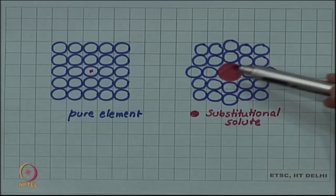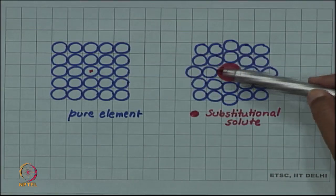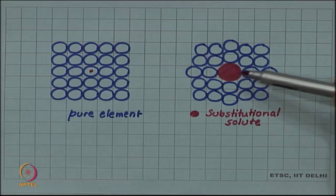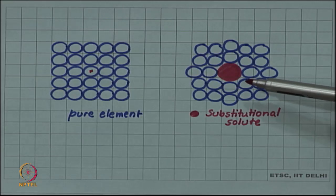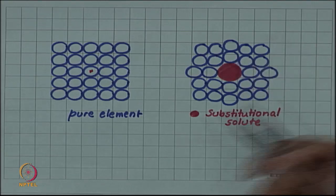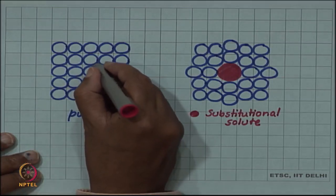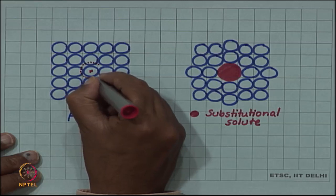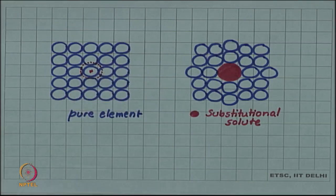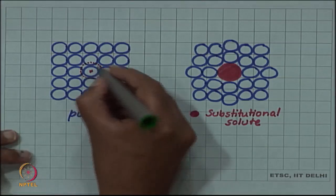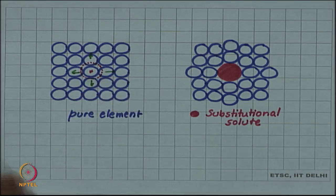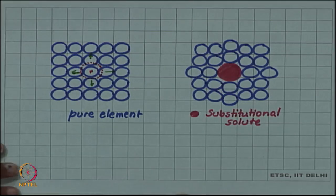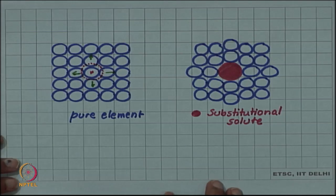As I have drawn it, you can see that I have substituted a larger substitutional solute atom. Because this atom is larger, it will displace the atoms around it to make room for itself. Since we are replacing a smaller atom with a larger one, the surrounding atoms are displaced, and these displacements cause a deformation or a strain field around the solute atom.